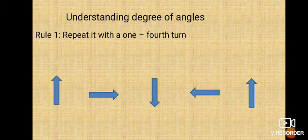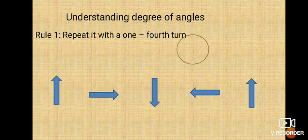Now, understanding the degree of angles. There are some certain rules of patterns. Before understanding the rules, let us see the degree of angles. You have already learned angles. Amongst the different types of angles, I told you about the right angle. Do you know how much degree a circle is? A circle is made up of 360 degrees. If you draw four sections of this circle, each section is of 90 degrees. So 90 degrees is a one-fourth turn.